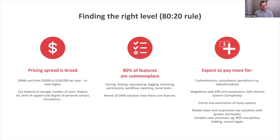If you know you need a DAM, here are a few tips. First: beware of pricing as an indicator. DAMs can cost anything from $2,000 to $100,000 a year or more. A really key point is that 80% of what you get will be common to all products — storing, sharing, repurposing, tagging, searching, and most permissions and workflow features are standard. The things you pay more for are services: custom procurement, legals, and end-to-end integration unique to your industry. Watch out — this is a big trap.